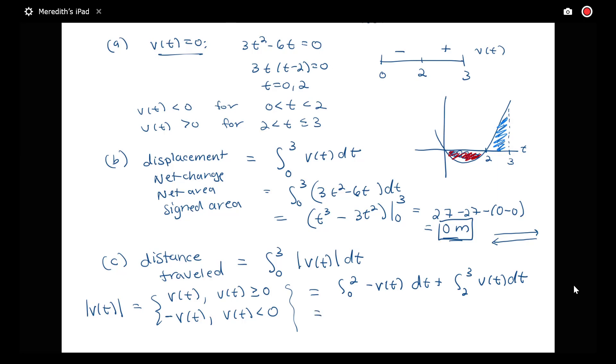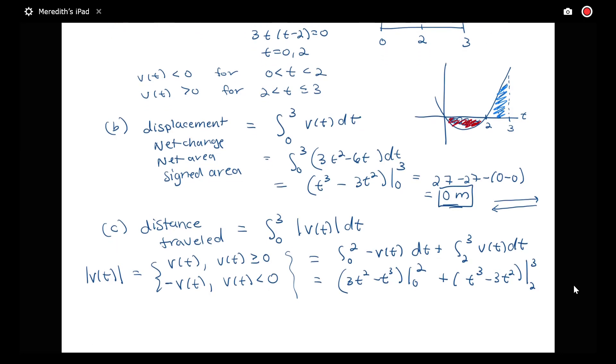We already found what our antiderivative is here; I just have a sign change. So I have 3t² - t³ for this first piece, evaluated from 0 to 2, plus t³ - 3t², evaluated from 2 to 3.